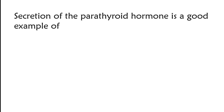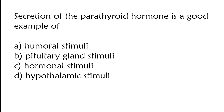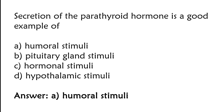Secretion of the parathyroid hormone is a good example of: humoral stimuli, pituitary gland stimuli, hormonal stimuli, or hypothalamic stimuli. The correct answer is option A. Secretion of the parathyroid hormone is a good example of humoral stimuli.